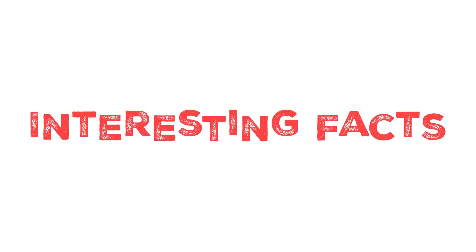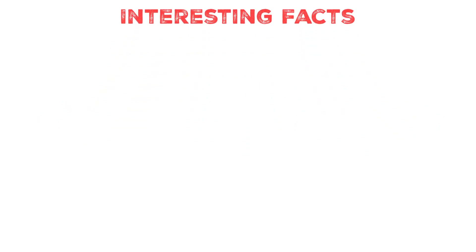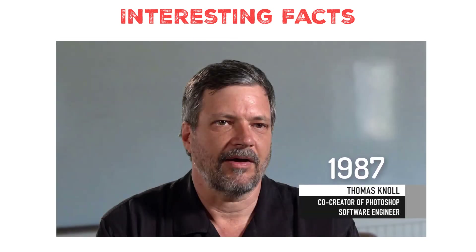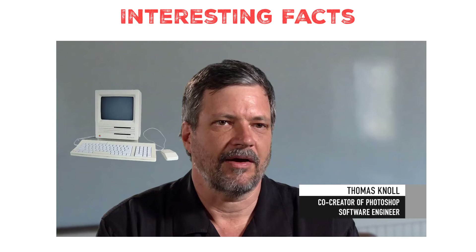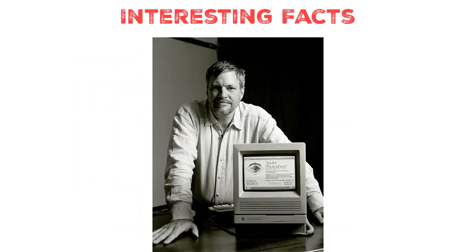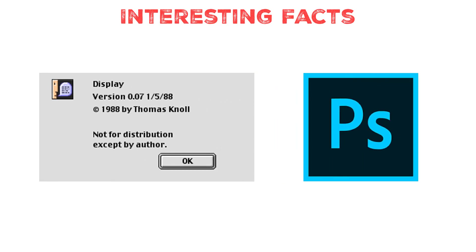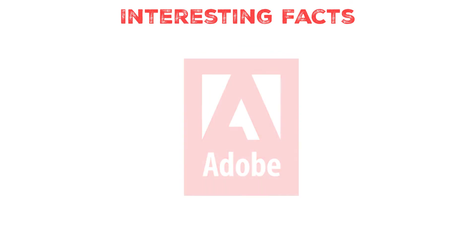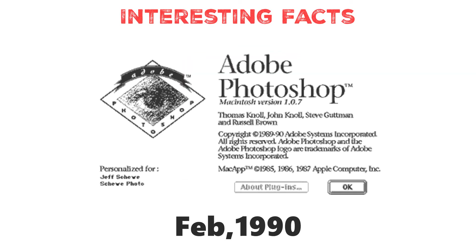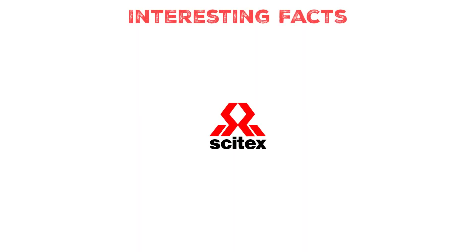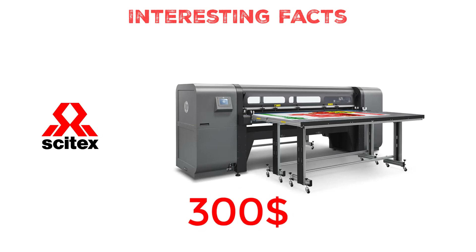Now let's know some interesting facts about Photoshop. The tale began in 1987 when PhD student Thomas Knoll wrote a graphics application on a Macintosh Plus. The software was used to display grayscale images on a monochrome display — Knoll called it Display. We could now consider Display as the unofficial father of our beloved Photoshop. In September 1988, everything changed for Photoshop when Adobe bought it. A year after, on February 1, 1990, Photoshop 1.0 was released. It included digital color editing and retouching, was dedicated for use in high-end platforms such as the Sitex, and cost $300 for basic photo retouching.